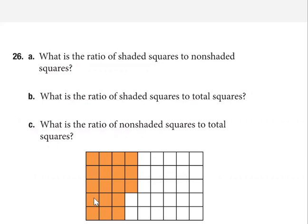I have 1, 2, 3, 4, 5, and then another 5, and then another 5 — so that's 15 — and then 3 more, that's 18 shaded, isn't it? Yes.